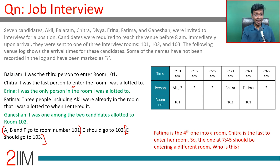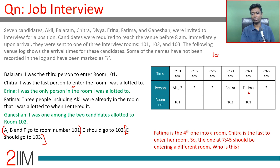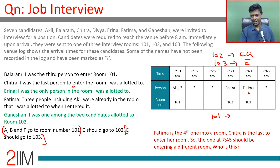A, B, and F go to room 101; E goes to 103; G goes to 102. Chitra was the last person to enter her room. Since Fatima enters after Chitra, Chitra did not enter 101 — so Chitra goes to 102. Now we know all the names: 102 has C and G, 103 has E, and 101 has A, B, F, and D.